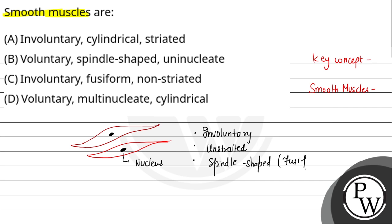And this spindle shape is also known as the fusiform shape. Right? And this is what is the involuntary. Now see, we can see that there is only one nucleus, so it is uninucleated.